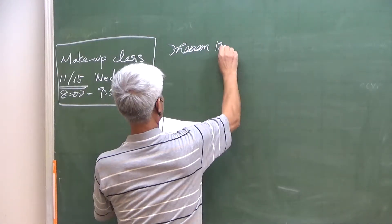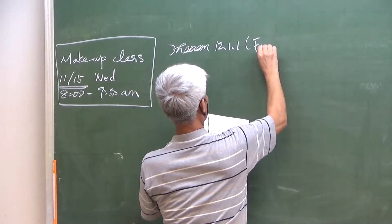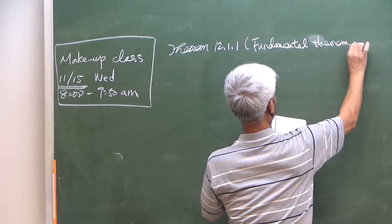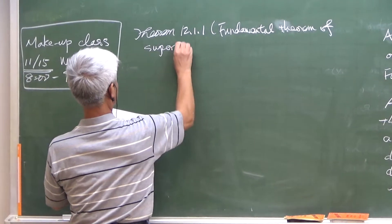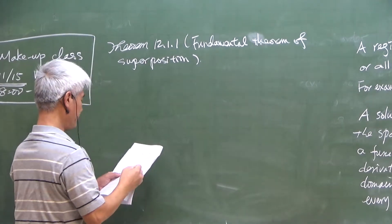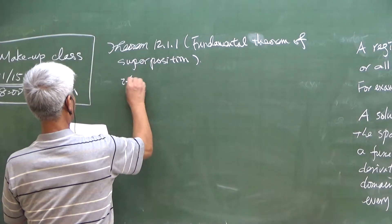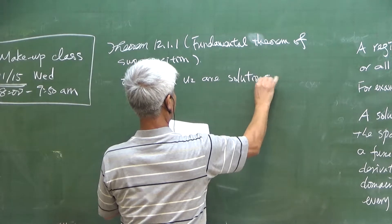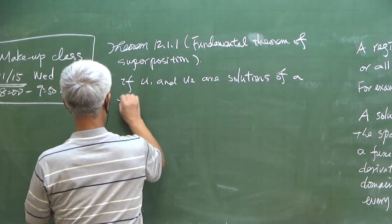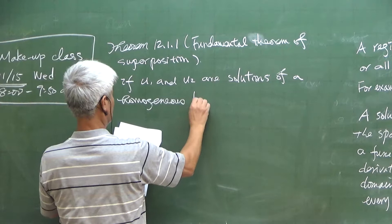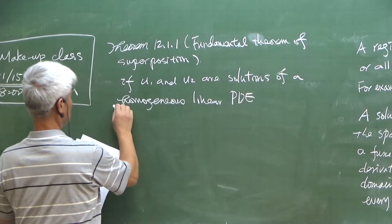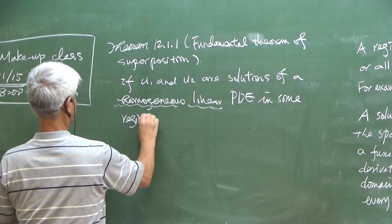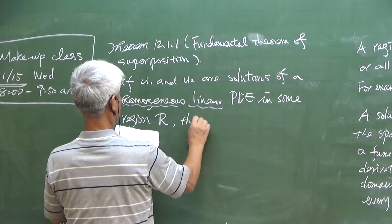There is a simple theorem for this section. It's called the fundamental theorem of superposition. It's only valid for homogeneous linear PDEs. If U1 and U2 are solutions for a homogeneous linear PDE, it's very important that we have homogeneous and linear PDE in some region. Then we have two solutions, U1 and U2.